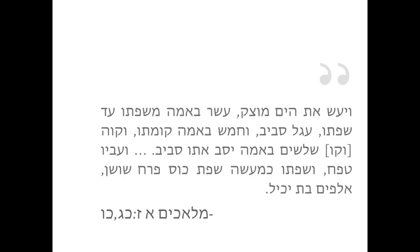V'kav Shloshim Ba'ama Yasevo Sosaviv And the thirty Amal line could surround it. And a few Pesachim later it says, V'abav Tefach Its width was a Tefach U Sfaso Kemase Sfas Kospach Shusham And its lip was like that of a rose petal cup. Alpine Bas Yachel And it could hold two thousand Bas.